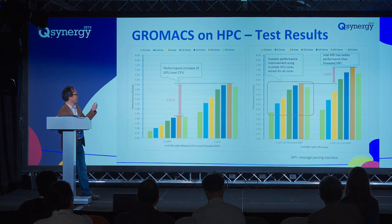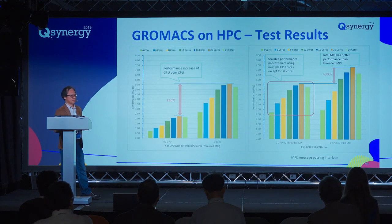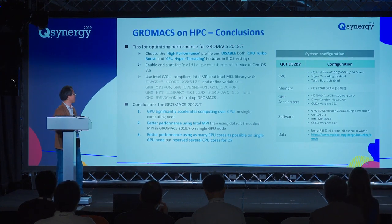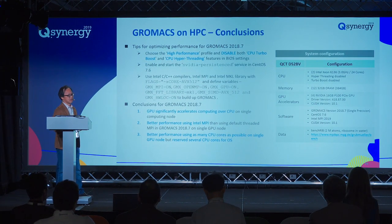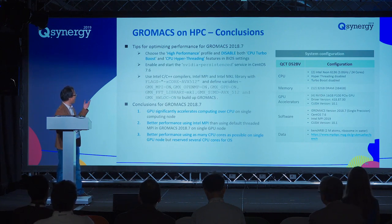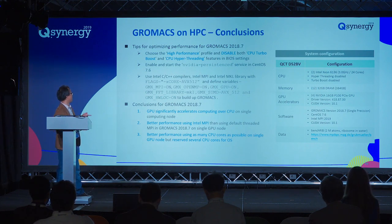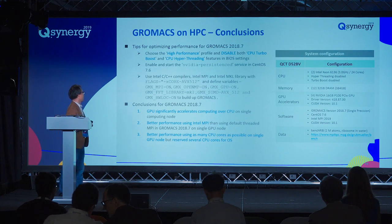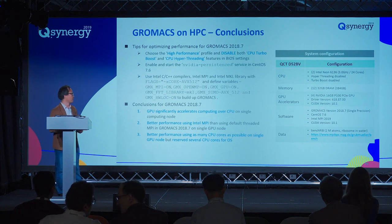Using Intel MPI gives another 30% performance gain. Besides those settings, you can also do fine-tuning from the BIOS — for example, choose the high-performance mode from the QCT BIOS menu, and remember to disable CPU Turbo Boost and CPU Hyper-Threading. We also recommend using the Intel C/C++ compiler, Intel MPI, and the Intel MKL library to get the best performance.